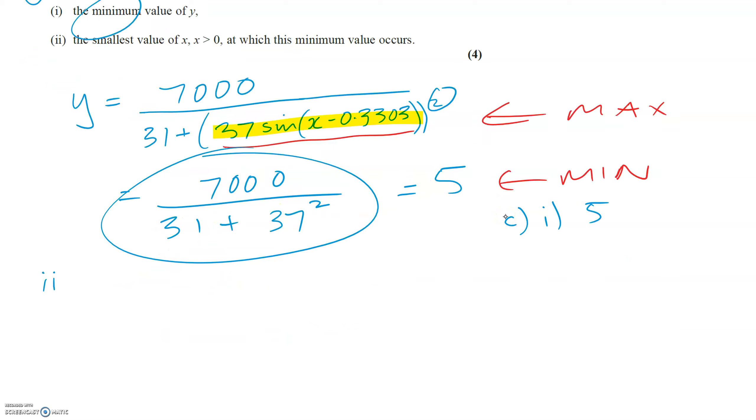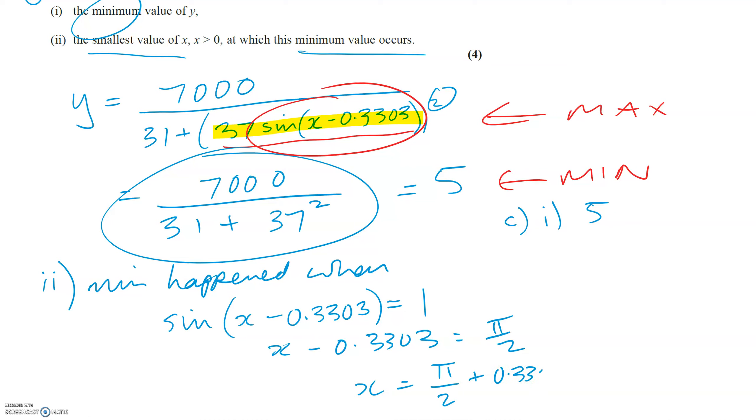And in part two, we need to find the smallest positive value of X when this minimum value occurs. Well, this minimum value happened when this here, this value of sine X, equaled one. Because when that sine value equal one, that's where we got 37 from. So we just need to solve that now. So if you do inverse sine of one, that would be pi over two. If we add that over to the other side, if we add 0.3303 over, we get the answer, which is 1.9023, to four significant figures.